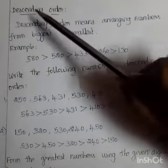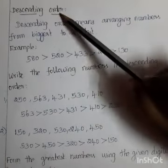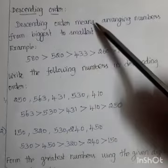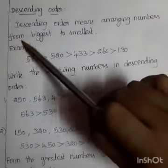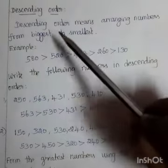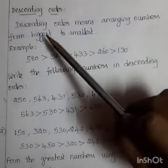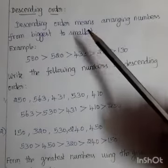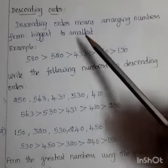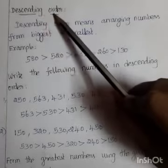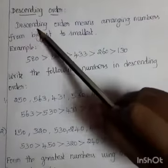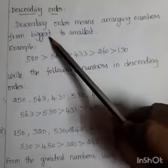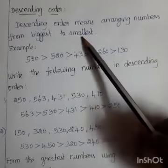Descending order. Descending order means irangu varisai. Descending order means arranging numbers from biggest to smallest. Biggest means mika periye. Smallest means mika chiriya. What is descending order? Descending order means arranging numbers from biggest to smallest.